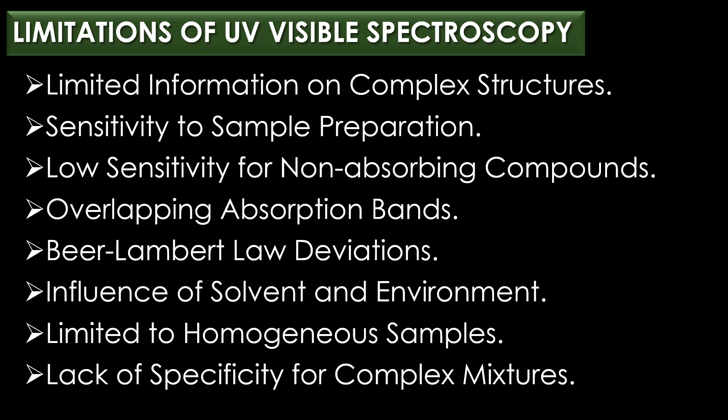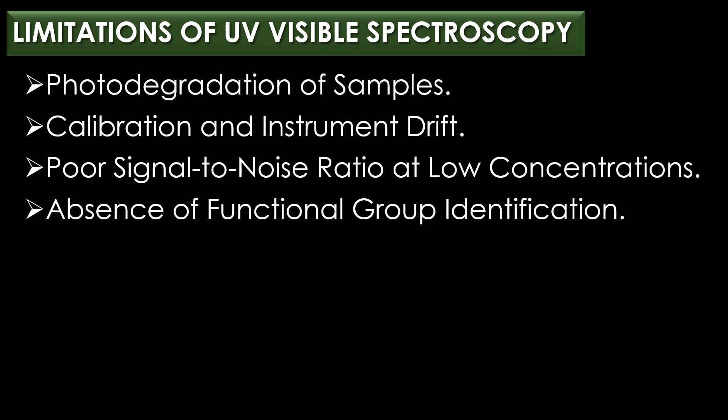Limitations of UV-visible spectroscopy include: limited information on complex structures, sensitivity to sample preparation, low sensitivity for non-absorbing compounds, overlapping absorption bands, Beer-Lambert's Law deviations, influence of solvent and environment, limited to homogeneous samples, lack of specificity for complex mixtures, photodegradation of samples, calibration and instrument drift, poor signal-to-noise ratio at low concentrations, and absence of functional group identification.